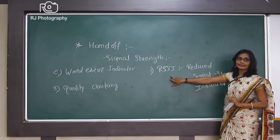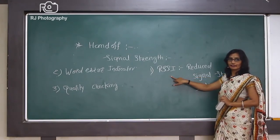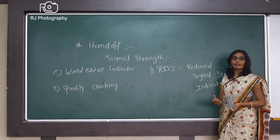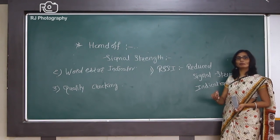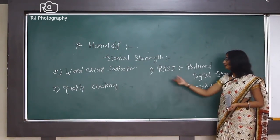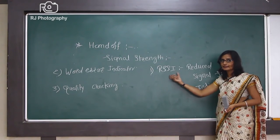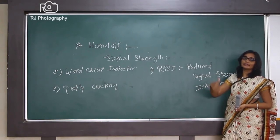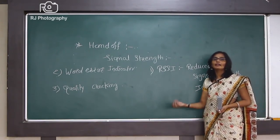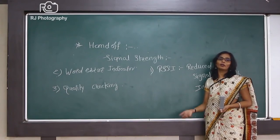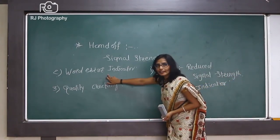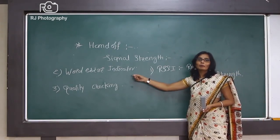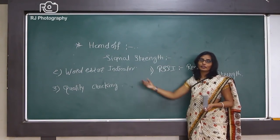The very first technique is RSSI, that is the Received Signal Strength Indicator. In this technique, the mobile station continuously checks the signal strength. There are certain devices inside the mobile receiver that help measure the signal strength. If the mobile finds that the signal strength received is less than the range of 90 to 100 dBm, the mobile station automatically informs the base station that the power strength is reduced and there may be a need for handoff. The second technique is the Word Error Indicator. In this technique, circuits are inbuilt in the mobile station, and the mobile station continuously checks for the incoming burst.